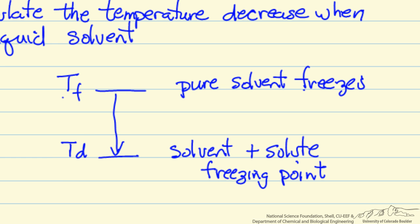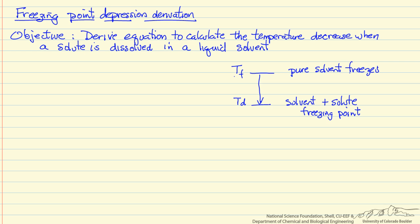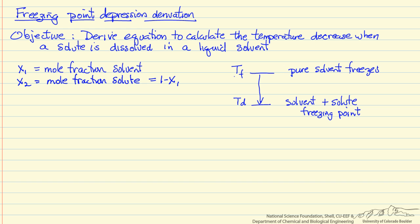The solid that forms does not contain the solute — it's the pure solvent in solid form. We need a couple of terms for the derivation: x1 is the mole fraction of the solvent, x2 is the mole fraction of the solute. Since there are only two components, x2 equals 1 minus x1.